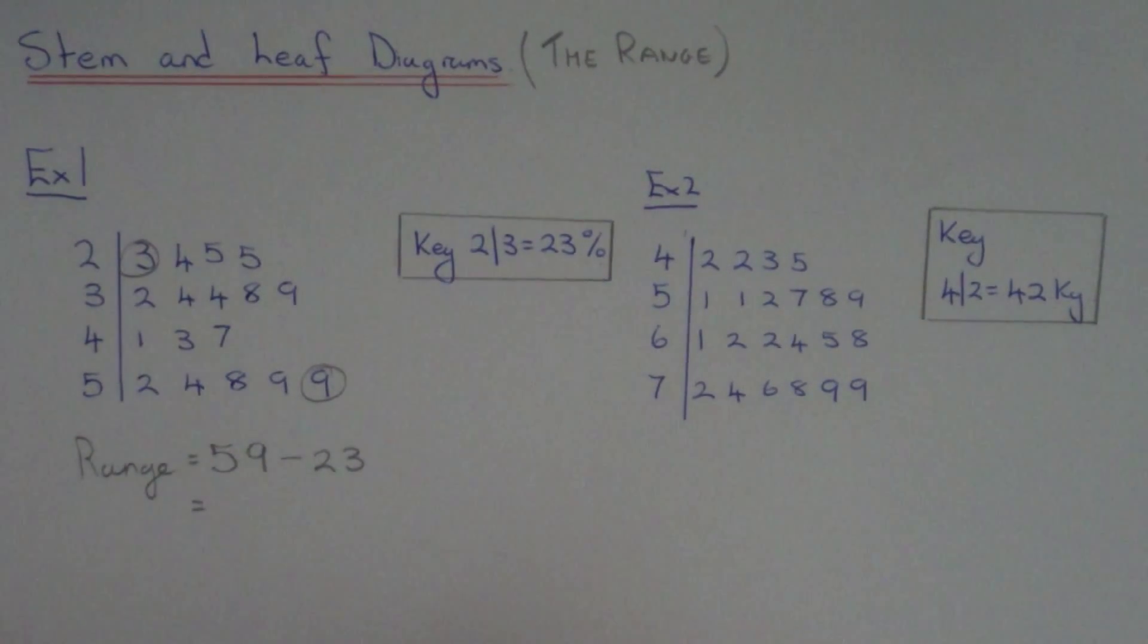So 59 take away 23 will give you 36 percent. So let's do one more example.